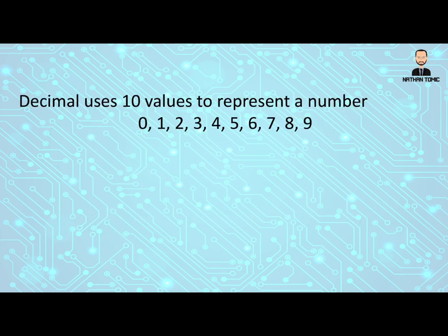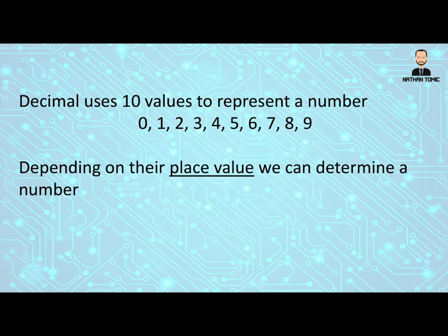So in decimal, we have 10 values that represent all the numbers. That is 0, 1, 2, 3, 4, 5, 6, 7, 8 and 9. And depending on where we place them, we can determine their number. So the place value of each of those values determines a number.